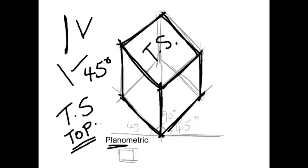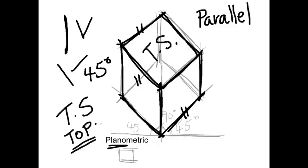Before we move on, an important point I didn't mention: these lines are parallel, so it's a parallel projection — the same way that an isometric and an oblique are. Now we're going to move on to the non-parallel projections, which means perspective projections.